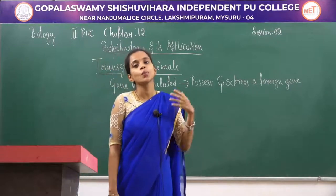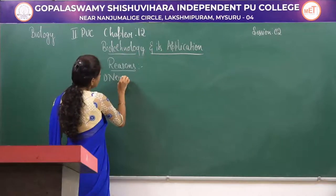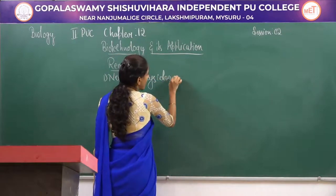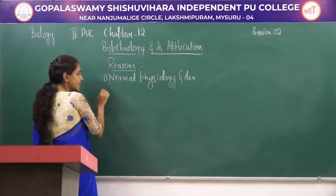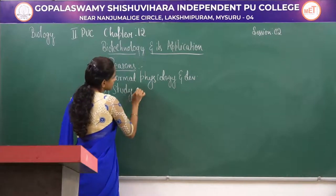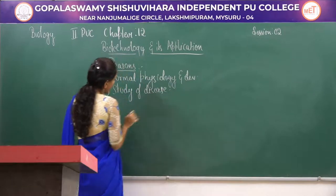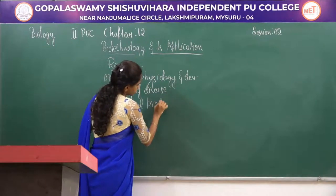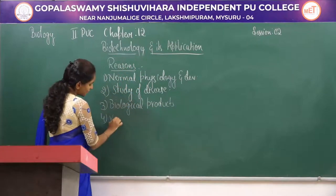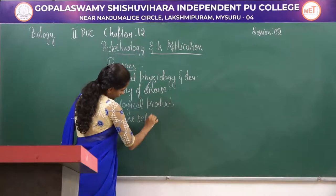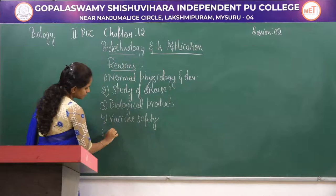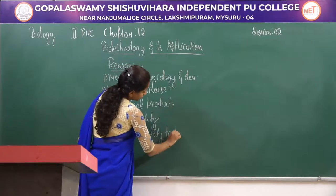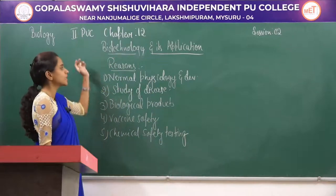We should know the reasons to produce transgenic animals. The five reasons are: first, normal physiology and development; second, study of disease; third, biological products; fourth, vaccine safety; and fifth, chemical safety testing.